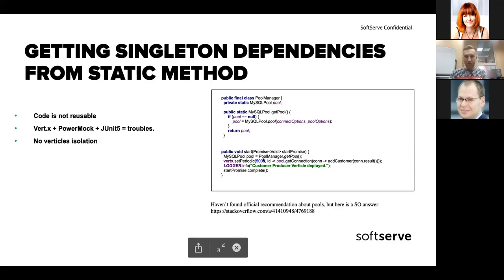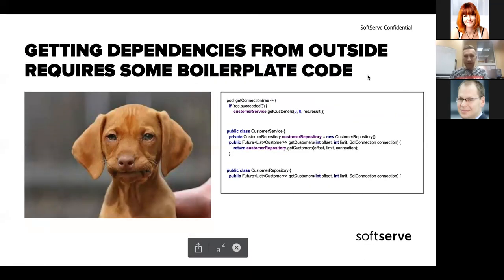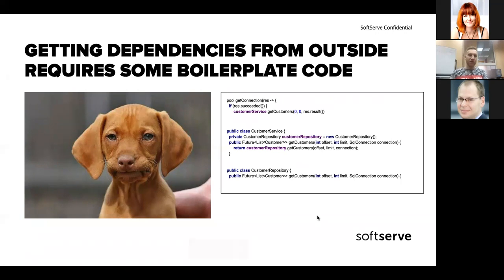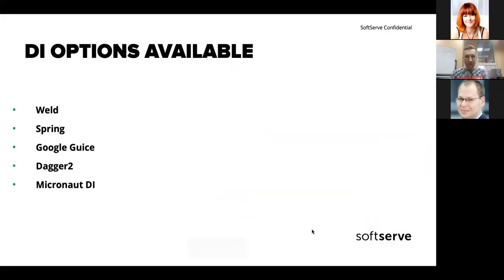There's also no Verticle isolation, as I mentioned. This pool is shared between all three Verticles — we're not isolating them, they're connected through this shared pool. If it's not thread-safe, we can have issues. And even if we provide dependencies from outside correctly, we still need to write routine code — we have this connection that must be passed every time. That's not developer-friendly, even if it's technically correct. So we decide we need DI.